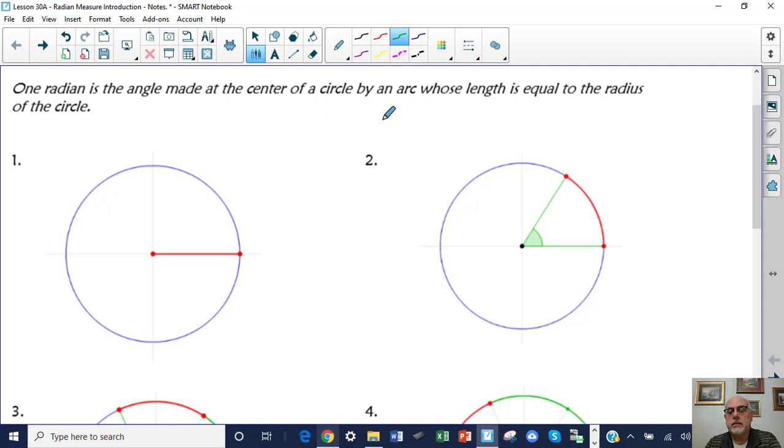So if we look at this and we have a circle here, there's your radius. Whatever that length is doesn't matter, so the radius of the circle. If I take the length of that radius and then wrap it around the circumference and the angle opens up to there, the length, the measure of that angle is one radian.